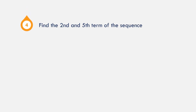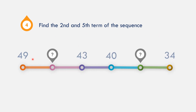In example number 4, find the second and the fifth term of the sequence: 49, unknown, 43, 40, unknown, 34. Let us see what could be the pattern.